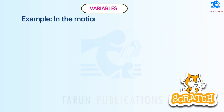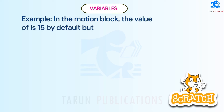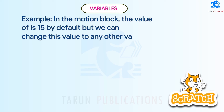It is called a variable because its value can vary — it is not a fixed value. For example, in the motion block, the value is 15 by default, but we can change this value to any other value according to our script.